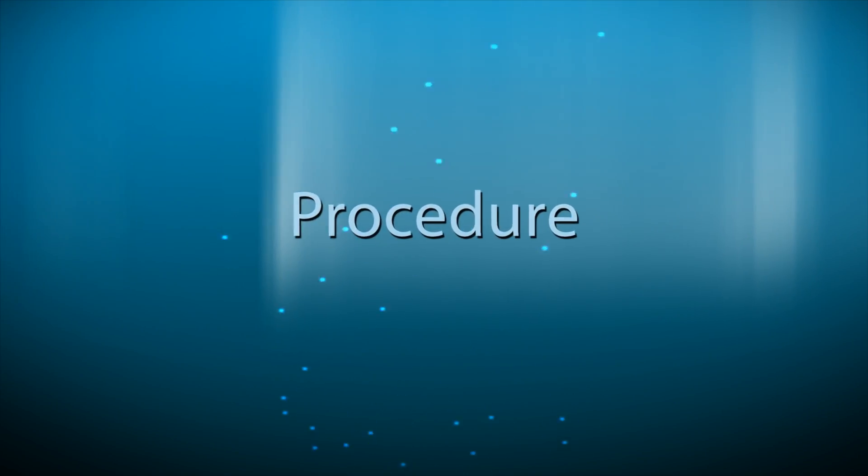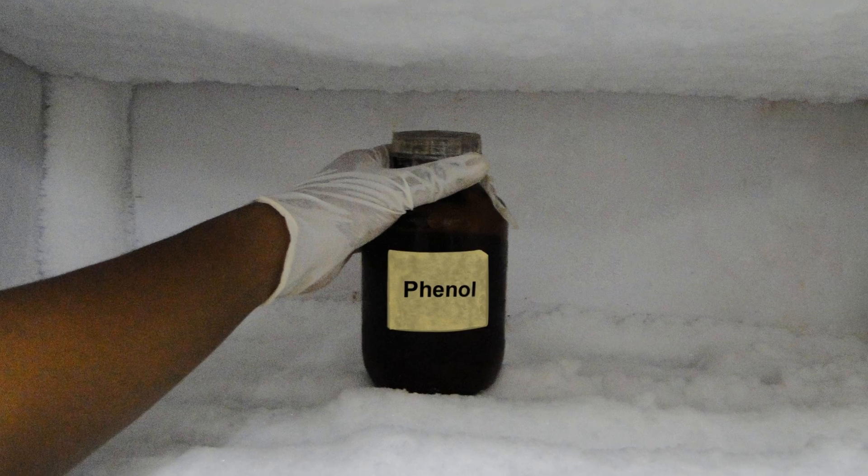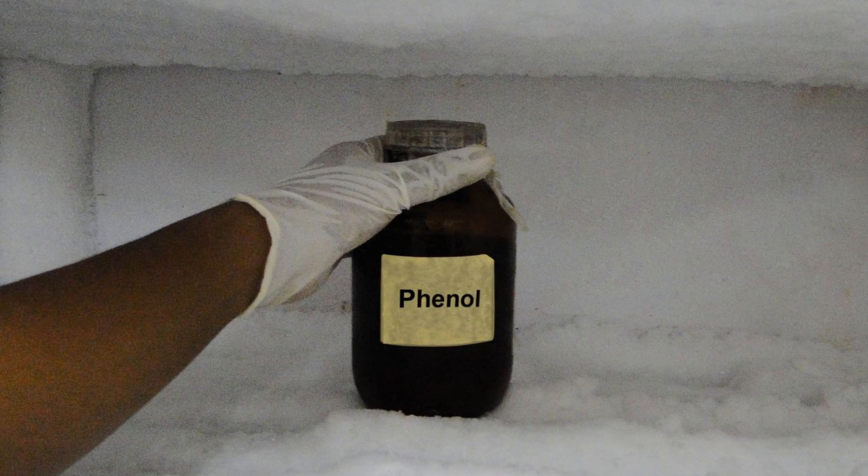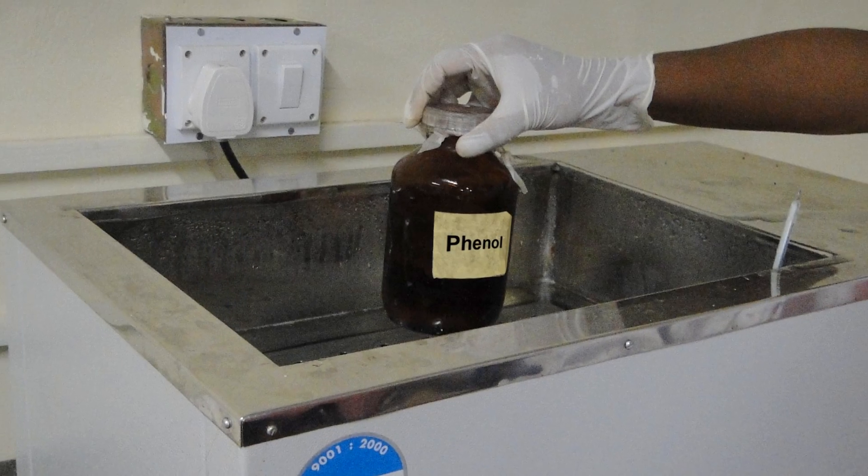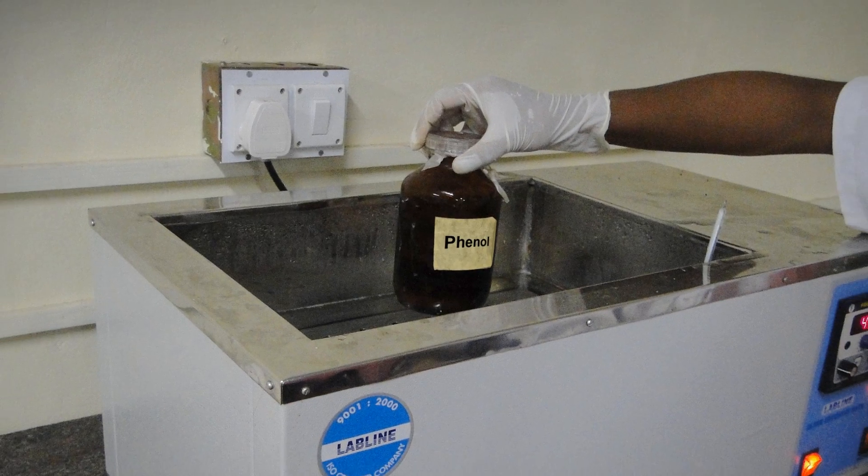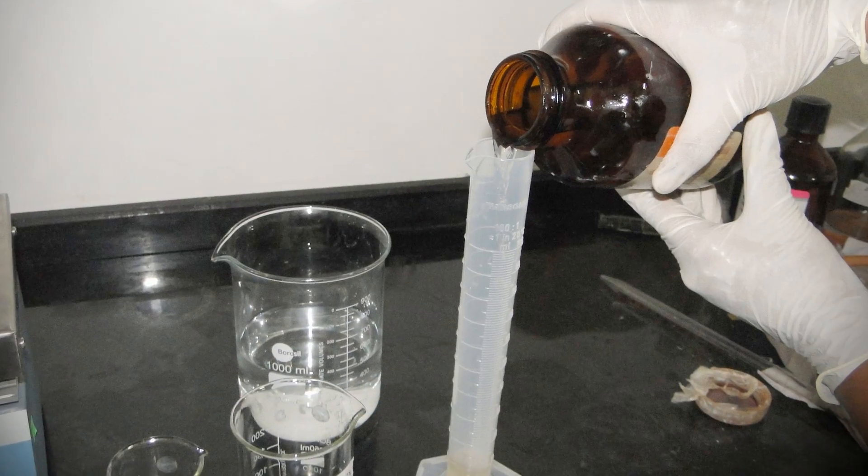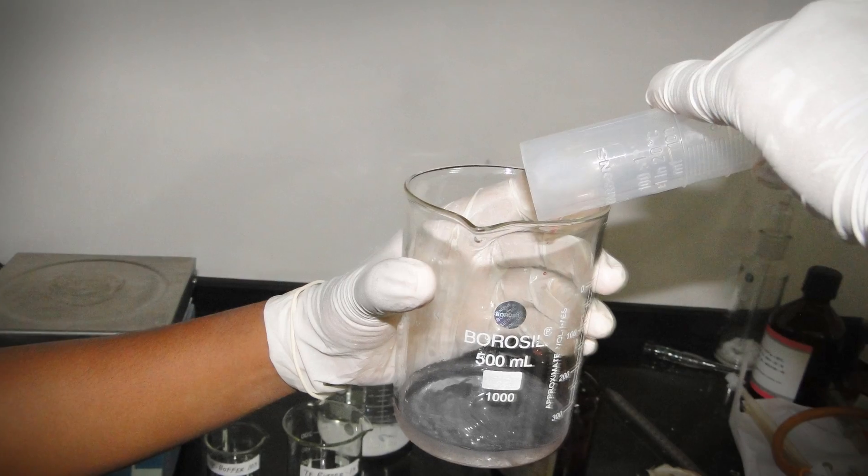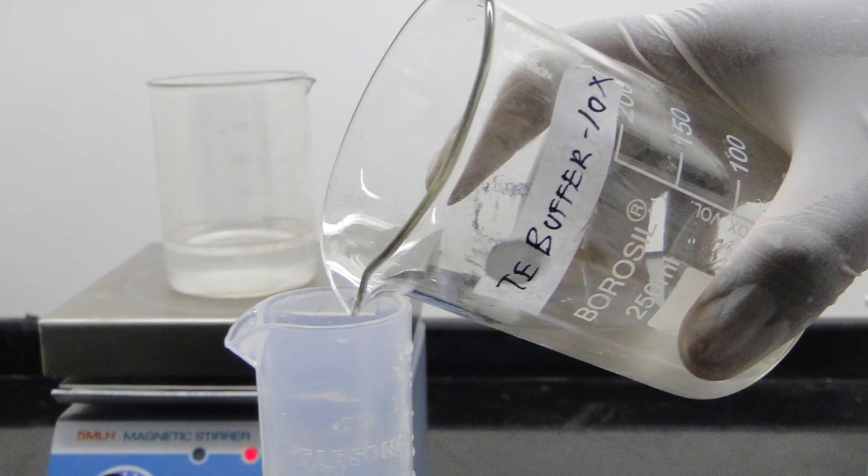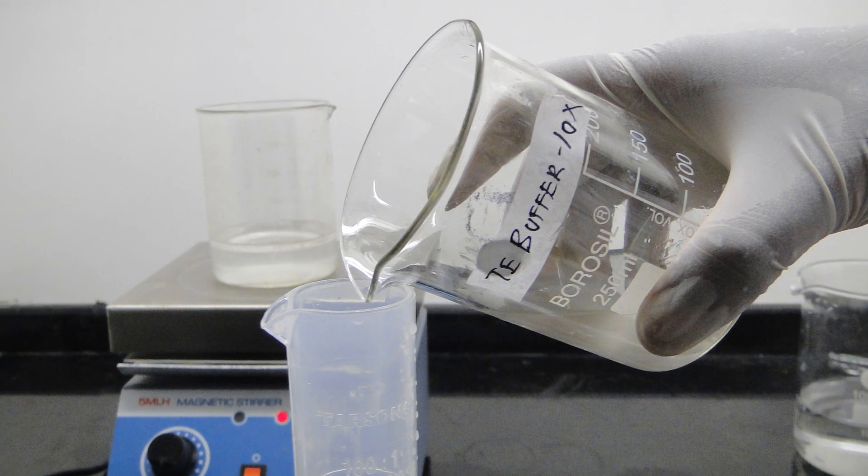The Procedure: Remove the crystalline phenol from the minus 20 degree celsius freezer and thaw it at 60 to 65 degrees celsius in a water bath. Add desired volume of phenol to an appropriate size bottle. Now add an equal volume of 10X TE to the phenol.